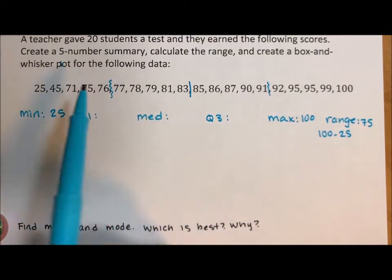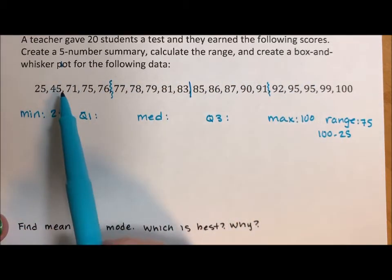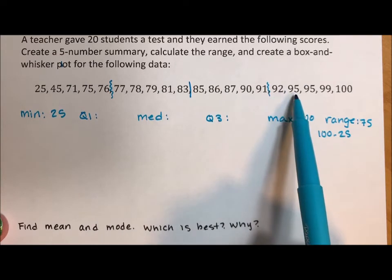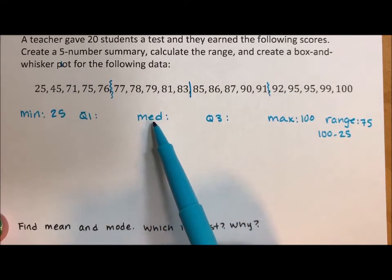The minimum is 25. The maximum is 100. That means the range, 100 minus 25, is 75. It's a huge range for this quiz. The five-number summary is breaking this data into quarters. Notice I have five numbers in each quarter. The median is the middle.